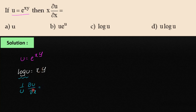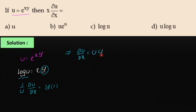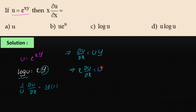partially differentiating with respect to x, y is constant, so y into differentiation of x is y·1 = y. That implies ∂u/∂x = u·y. Now multiplying both sides by x, we get x·∂u/∂x = u·xy.